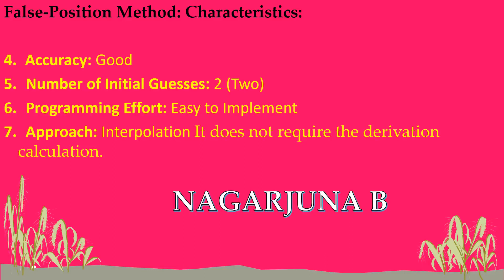The sixth characteristic is programming effort: easy to implement. While writing a program to find the root using the false position method, it is an easy approach. It uses interpolation and does not require derivative calculations. The formula is: x = [a·f(b) − b·f(a)] / [f(b) − f(a)]. We do not find the derivative of the given equation; this approach is called interpolation.